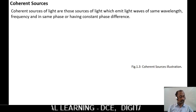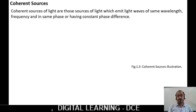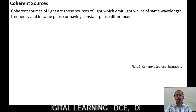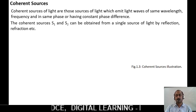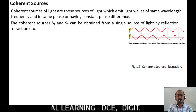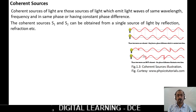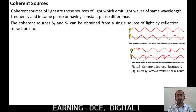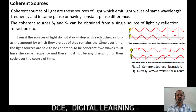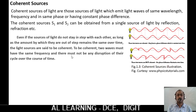What are coherent sources? Coherent sources of light are those sources which emit light waves of the same wavelength, frequency, and in phase, or having a constant phase difference. The coherent sources S1 and S2 can be obtained from a single source of light by reflection or refraction. The light waves coming from the two sources interfere together. Even if the sources do not stay in step with each other, as long as the amount by which they are out of step remains the same over time, the light sources are said to be coherent.